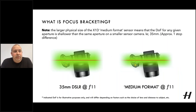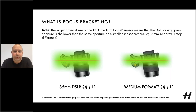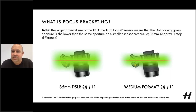Something to note: because of the larger physical size of the X1D's medium format sensor, the depth of field for any given aperture is shallower than the same aperture on a smaller sensor camera such as a 35mm. It's roughly about one stop difference for a full frame 35mm camera. So F11 on a 35mm is offering about one stop extra depth of field compared to our medium format sensor at F11. Depending on what you look for in your photography, this can be seen as either an advantage or disadvantage of medium format.